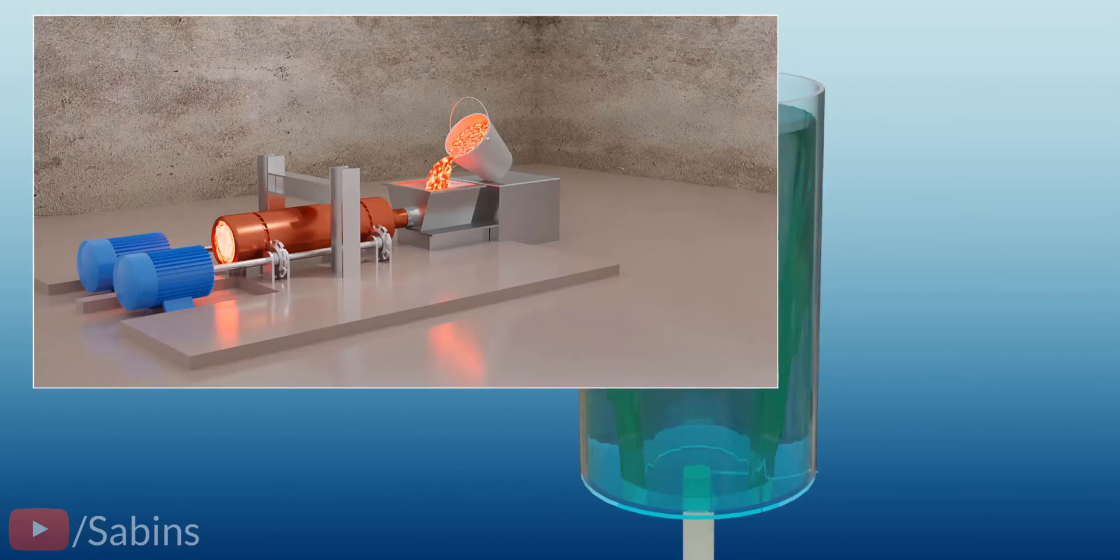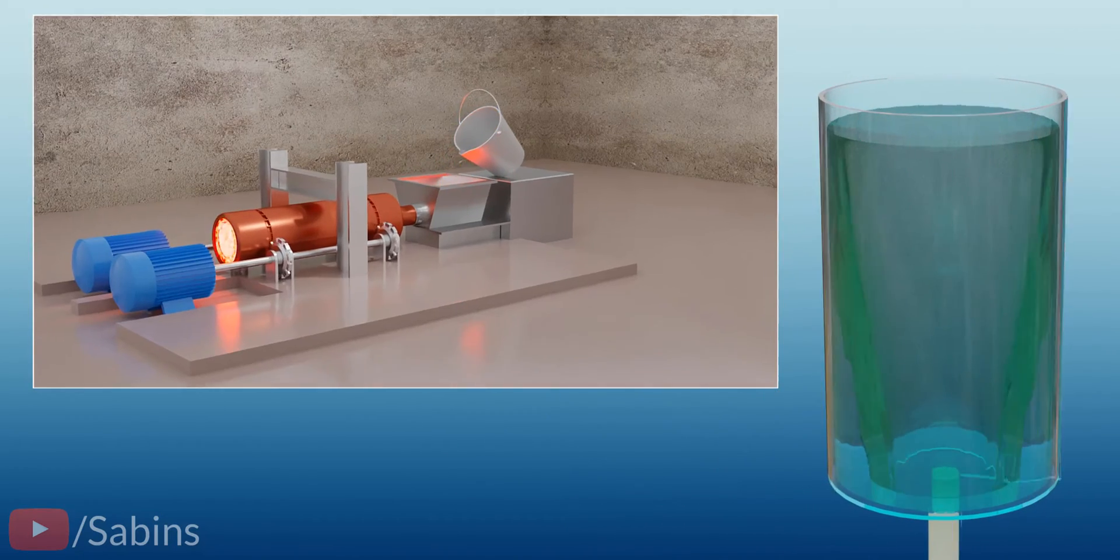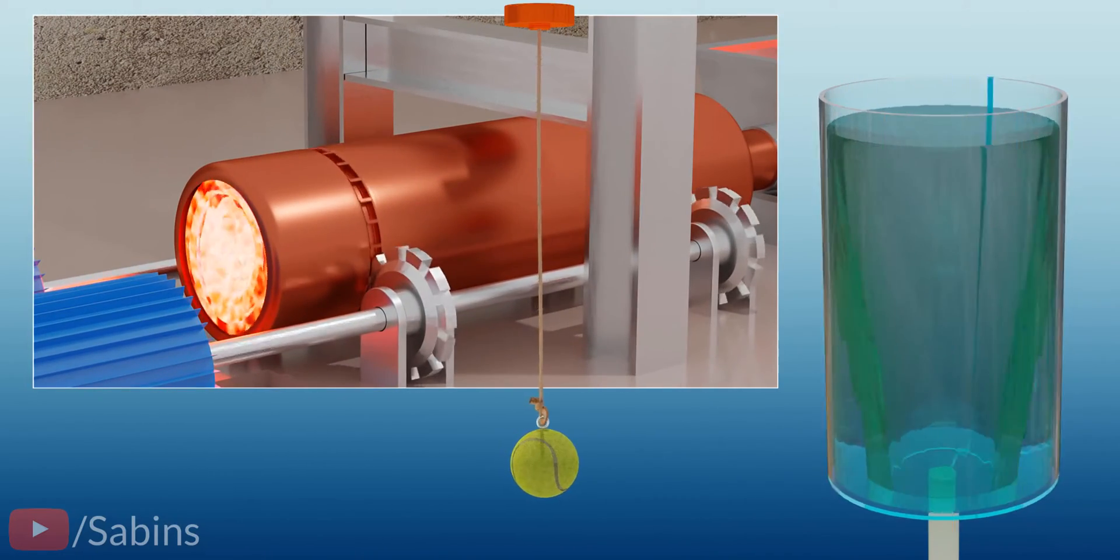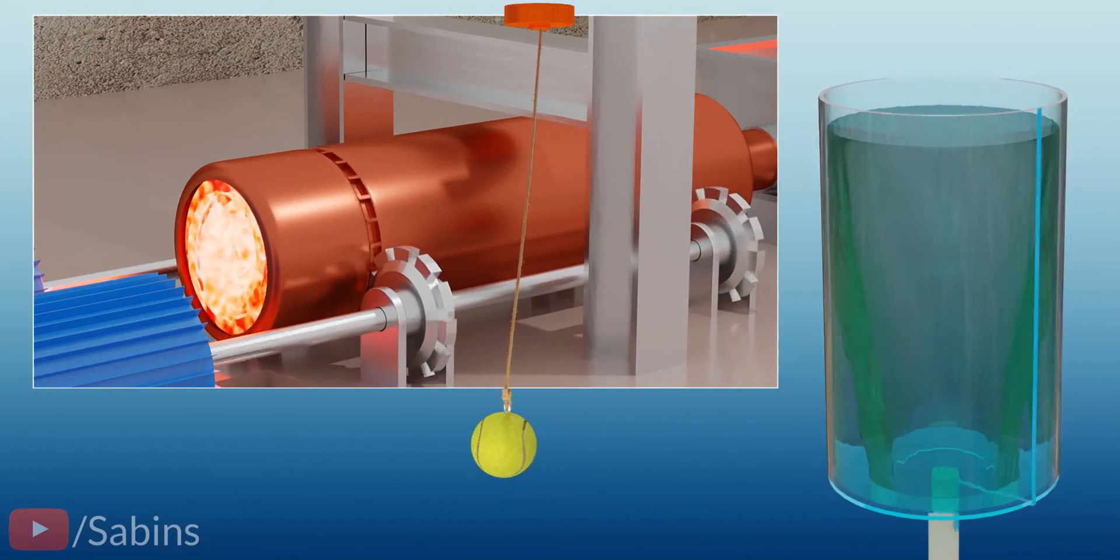Similarly, in this centrifugal casting process, the molten metal always moves to the outer wall. As you increase the speed of this suspended ball, the ball also travels outward.